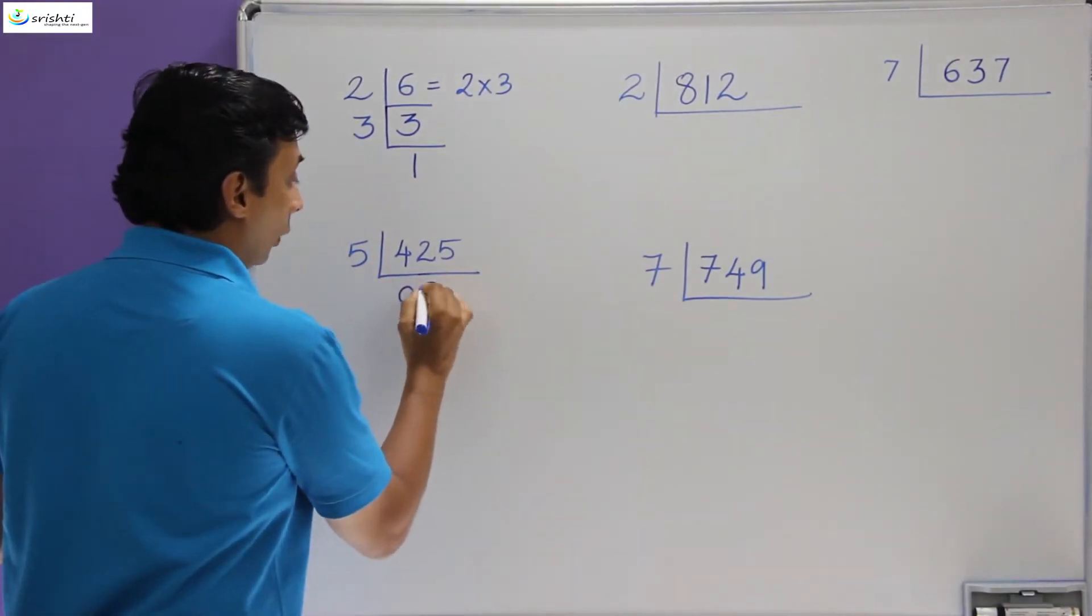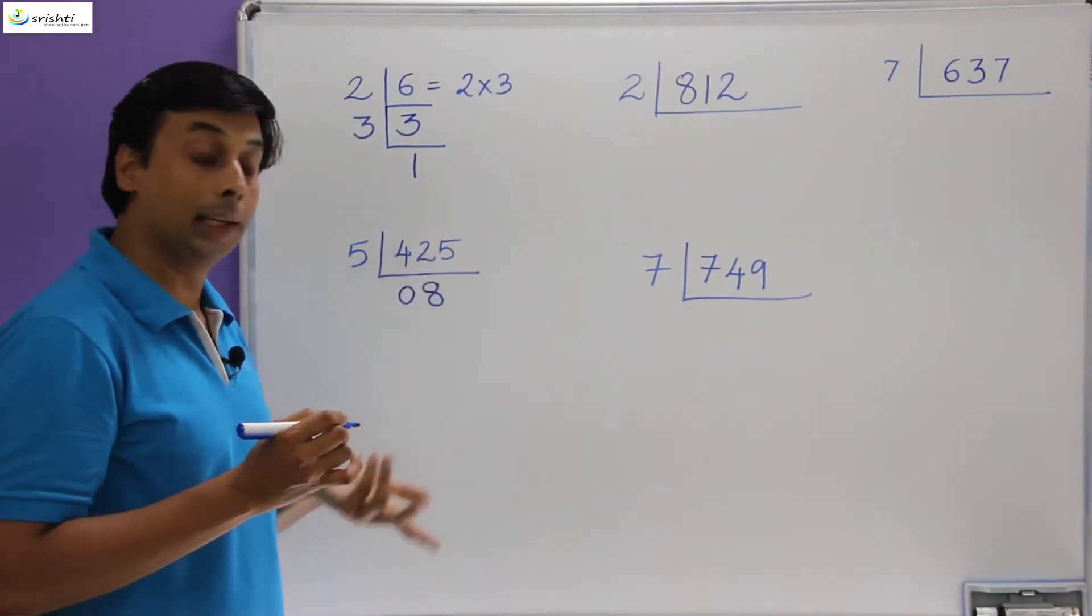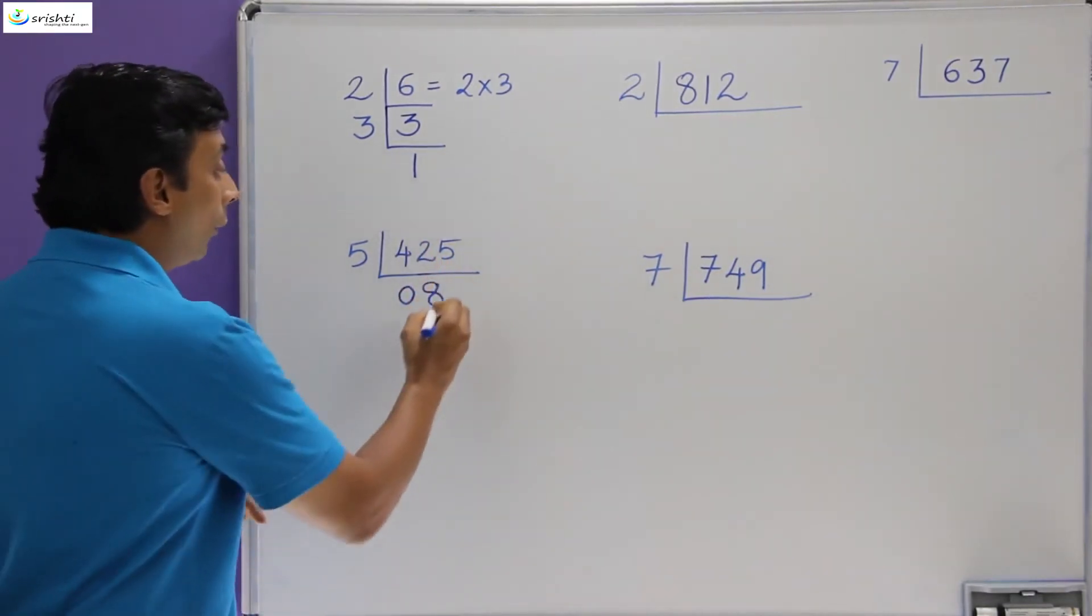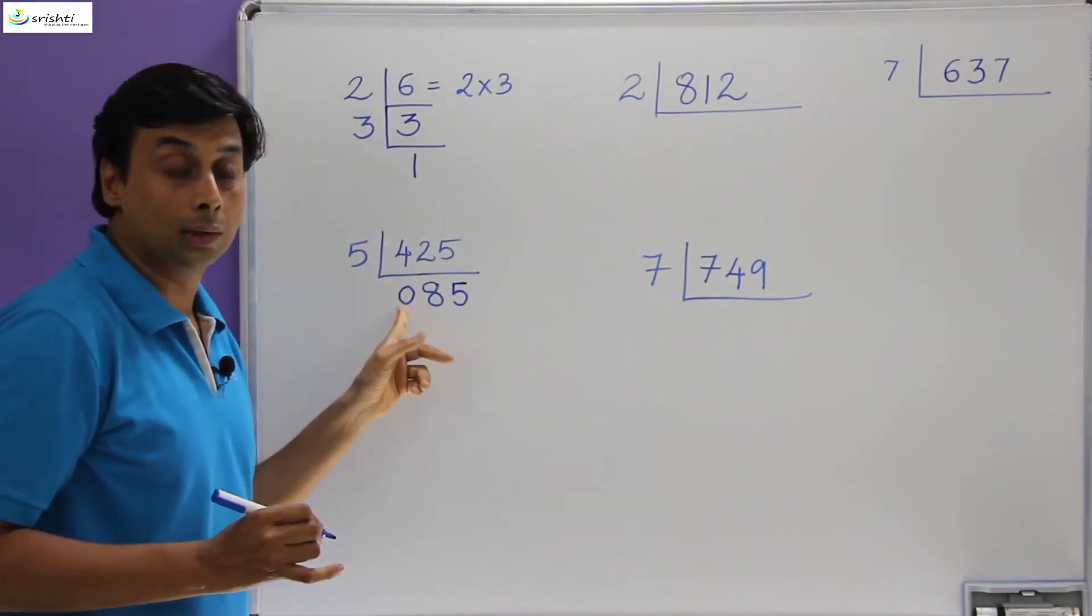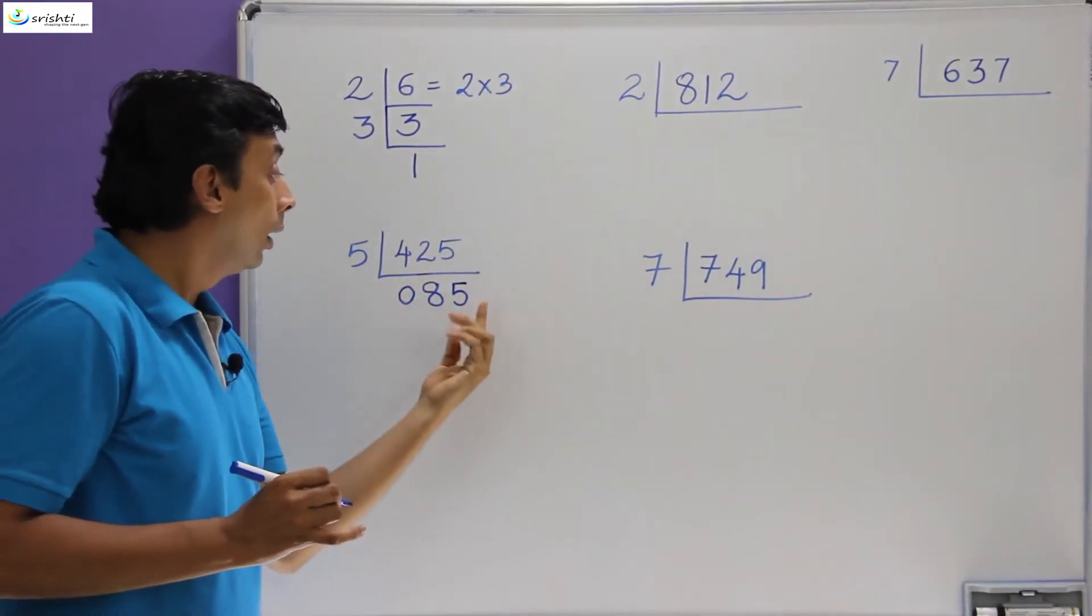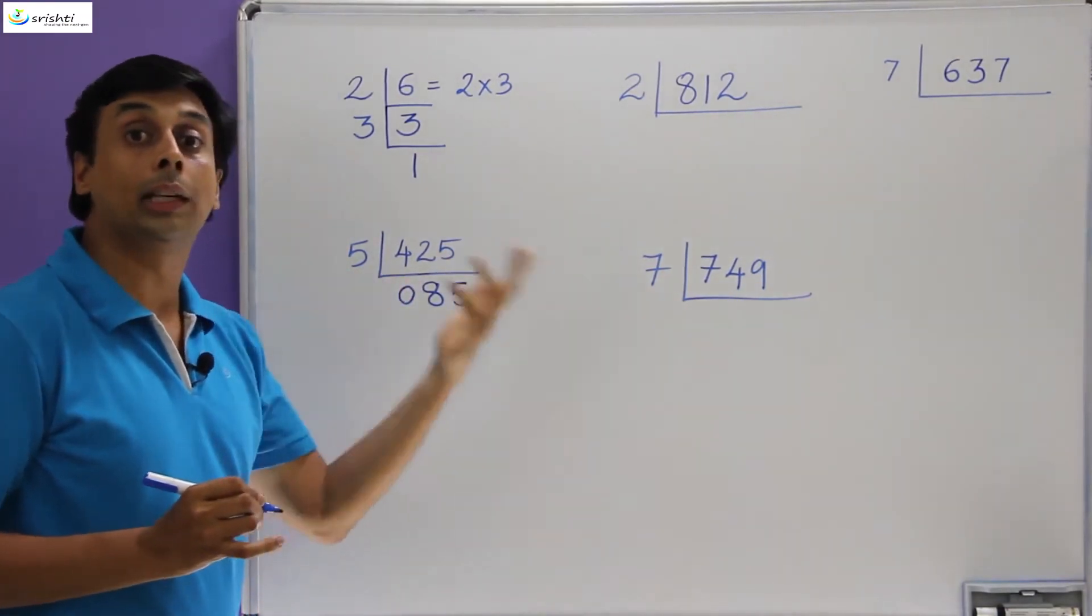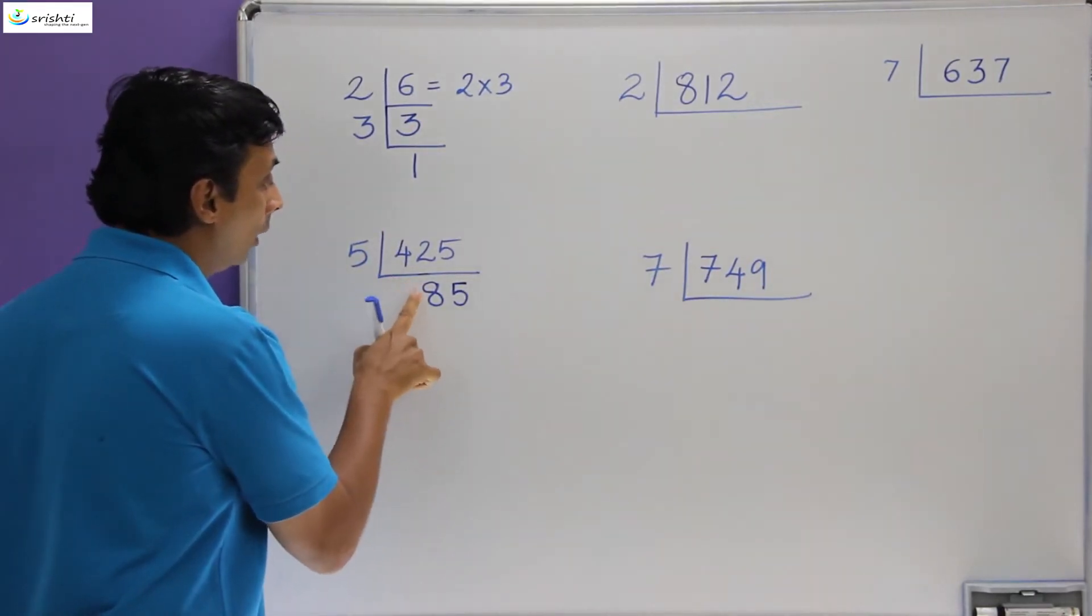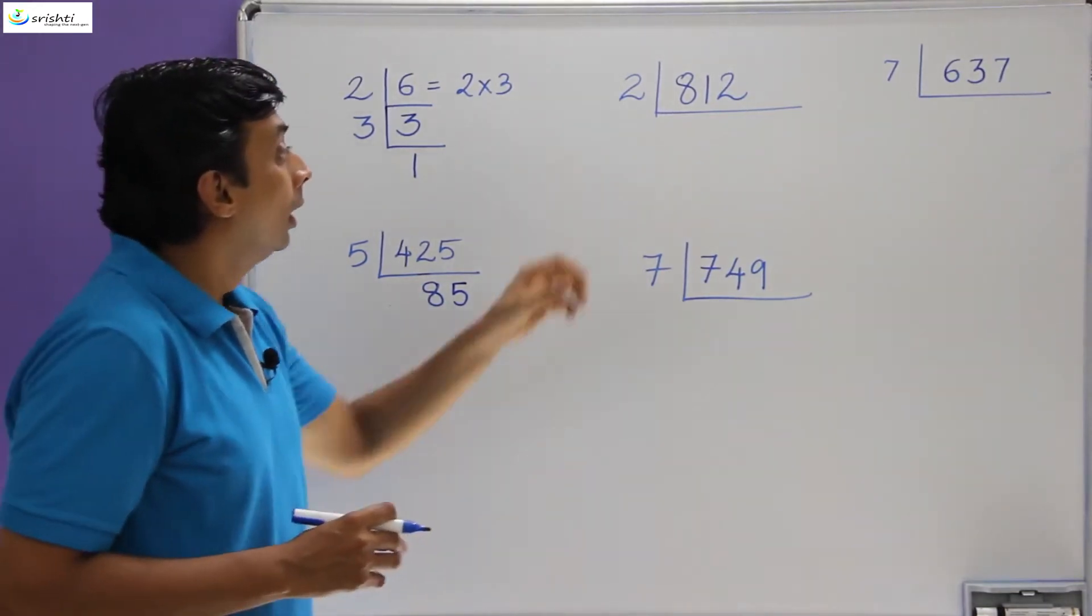So 42 divided by 5—we know that 5 eights are 40, that is the biggest number that you can write as the quotient. So 5 eights are 40. Now there is a remainder of 2. 42 minus 40 is 2, and that 2 gets appended with 5 and it becomes 25. So 5 fives are 25. But since this particular 0 does not have a value—because any 0 written towards the left side or after the decimal point does not actually have a value, the leading 0s or the trailing 0s do not actually have a value—you can actually omit writing this particular 0. Therefore, 425 divided by 5 is 85.